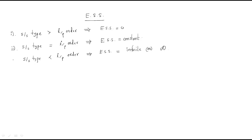These three points are very useful when solving problems involving steady-state error. It is a general rule: whenever system type is more than the input order, error is zero; when system type equals input order, steady-state error has some constant value; when system type is less than the input order, steady-state error is infinite.